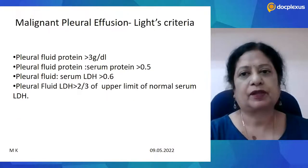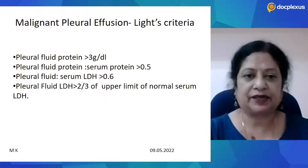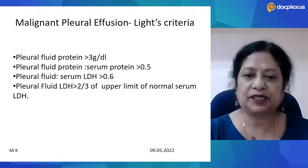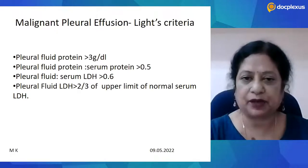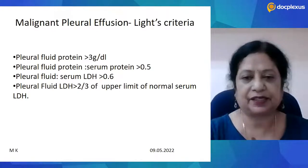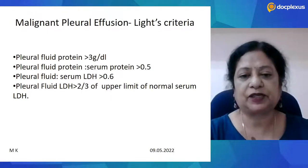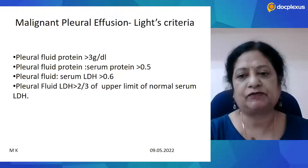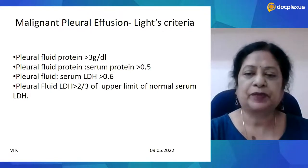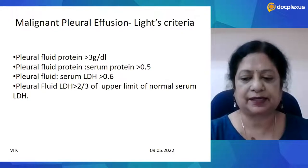Any pleural effusion that is exudative must follow Light's criteria. Pleural protein more than 3 g/dL; pleural fluid protein to serum protein ratio more than 0.5; pleural fluid LDH to serum LDH ratio more than 0.6; and pleural fluid LDH more than two-thirds of the upper limit of normal serum LDH. So first, we should prove that it is an exudative fluid.